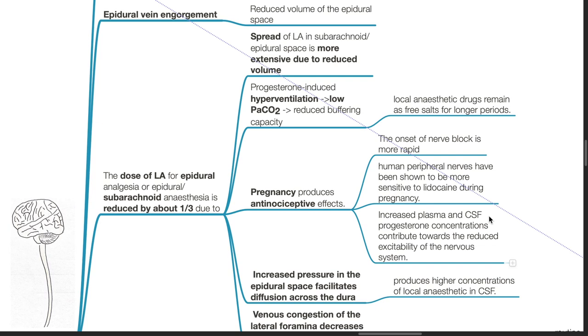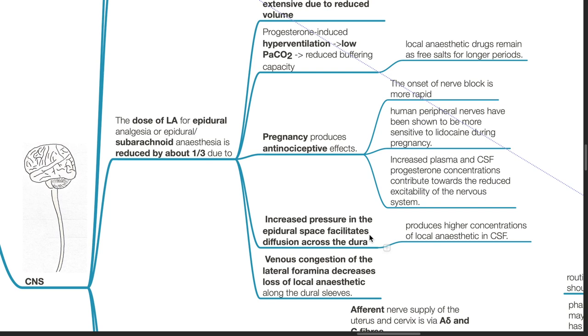Increased plasma and CSF progesterone concentrations contribute to reduced excitability of the nervous system. Increased pressure in the epidural space facilitates diffusion across the dura, producing higher concentrations of local anesthetic in the CSF. Venous congestion of the lateral foramina decreases loss of local anesthetic along dural sleeves.